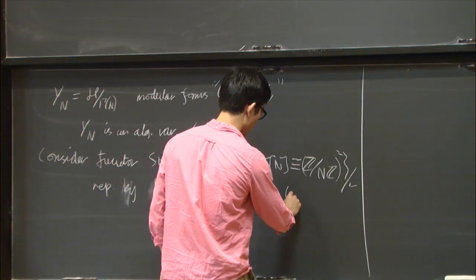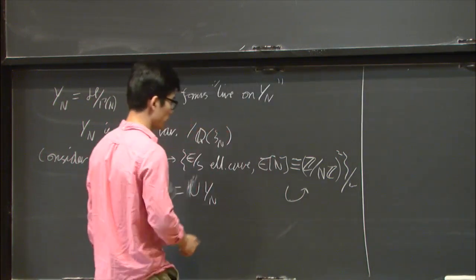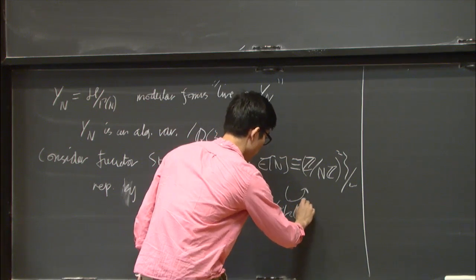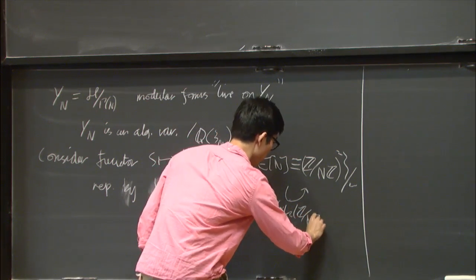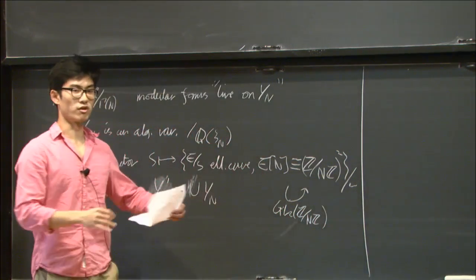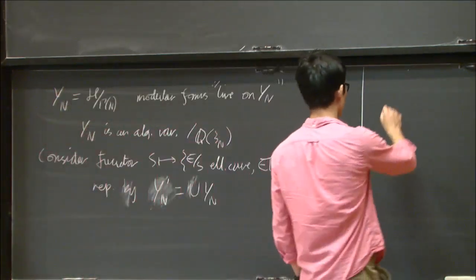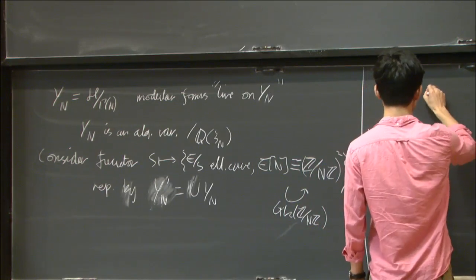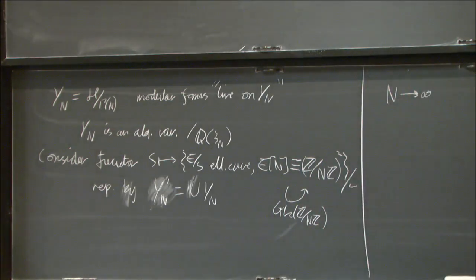Another upshot of this definition is that you can see that there's an action on the space of the group GL2Z mod nZ, just by modifying this isomorphism. And this action is algebraic, so now I can let n go to infinity.